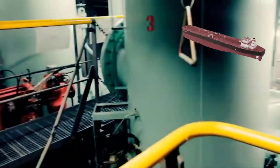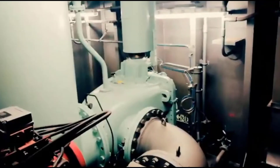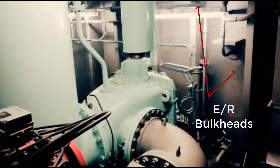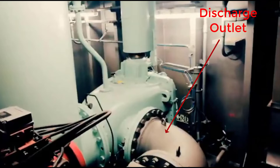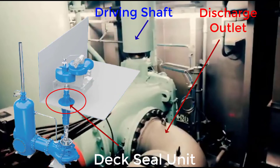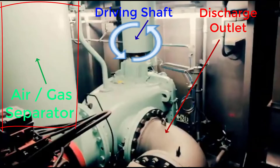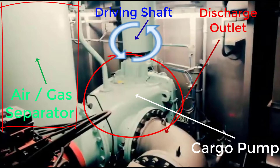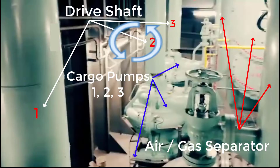I'll show you a quick close-up. We are looking at the right side of the pumps, viewing towards the stern or engine bulkhead. This is the discharge outlet of the pumps, the driving shaft coming down from the deck seal unit, air or gas separator, and lastly this is the cargo pump — single-stage, radial-type flow — which can be fitted with a steam turbine or electrical motor drive system. This is the full view of all the cargo pumps 1, 2, and 3.